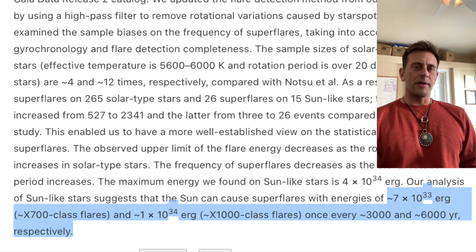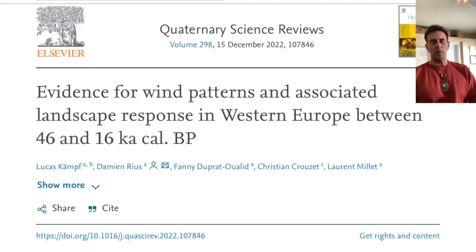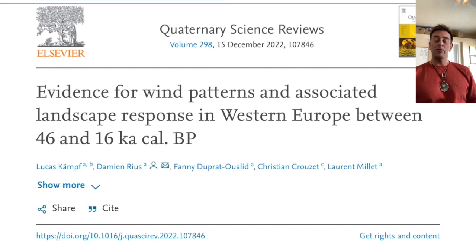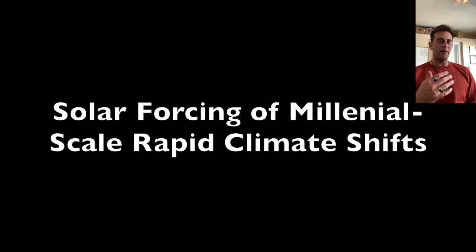A little bit more on this. There is a quarter cycle — the 1,500 year cycle — and not only have we seen this several times before, but we got another paper talking about it just earlier this week on the November 26th morning show, talking about millennial scale rapid climate shifts and how those were driven by the sun. That's going to be the Dansgaard-Oeschger events. They happen about every 1,500 years, and we have seen several times that those are forced by the sun. These really comprise the major flare cycles of the sun.